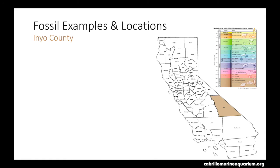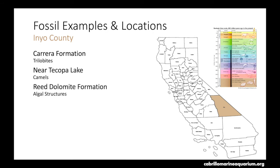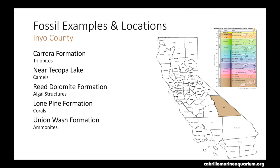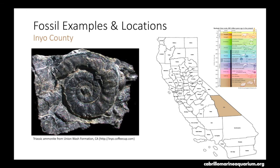First county up would be Inyo County. From the geologic time scale you can see that you can find fossils ranging in age from about 650 million years — the Precambrian — through the Triassic, which ended about 200 million years ago. In Inyo County you could find trilobites within the Carrera Formation, camel fossils near Tecopa Lake, fossilized algal structures within the Reed Dolomite Formation, fossilized corals within the Lone Pine Formation, and ammonites within the Union Wash Formation. Here is a photograph of a fossilized Triassic-aged ammonite from the Union Wash Formation.